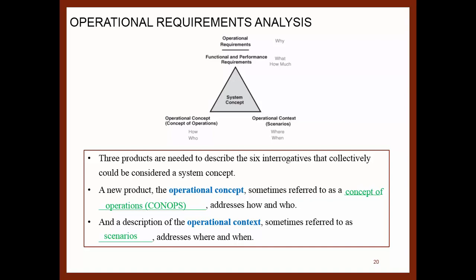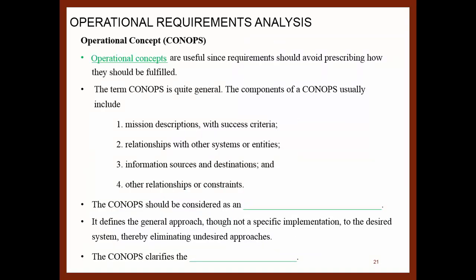Three products are needed to describe the six interrogatives. The operational concept, sometimes referred to as the concept of operations, addresses who and how. The description of the operational context, sometimes referred to as scenarios, addresses where and when. Operation concepts are useful since requirements should avoid prescribing how they should be fulfilled. The term CONOPS is quite general — its components usually include the mission description (success criteria), relationship with other systems or entities, information sources and destinations, and other relationships or constraints. The CONOPS should be considered as an addition to the operational requirements, identifying the general approach without specifying a specific implementation.